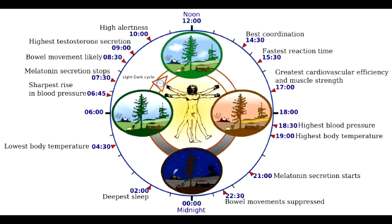What is the responsibility of the circadian rhythm? Circadian rhythm controls ACTH, which is the adrenocorticotropic hormone, prolactin, melatonin, and nocturnal norepinephrine release.